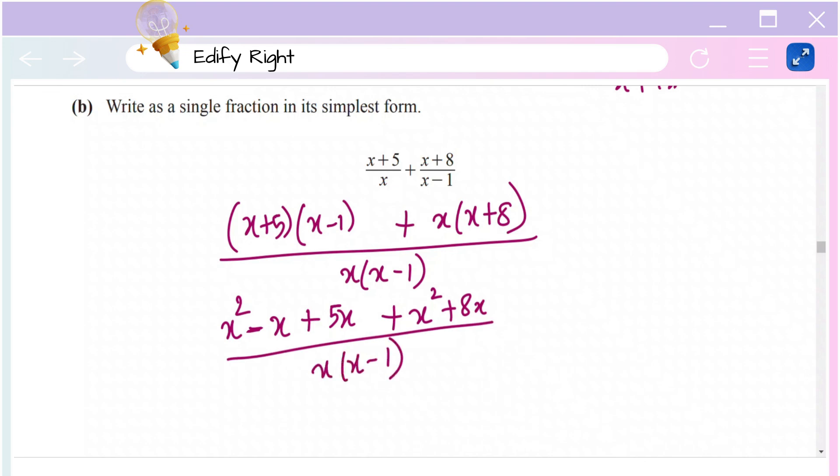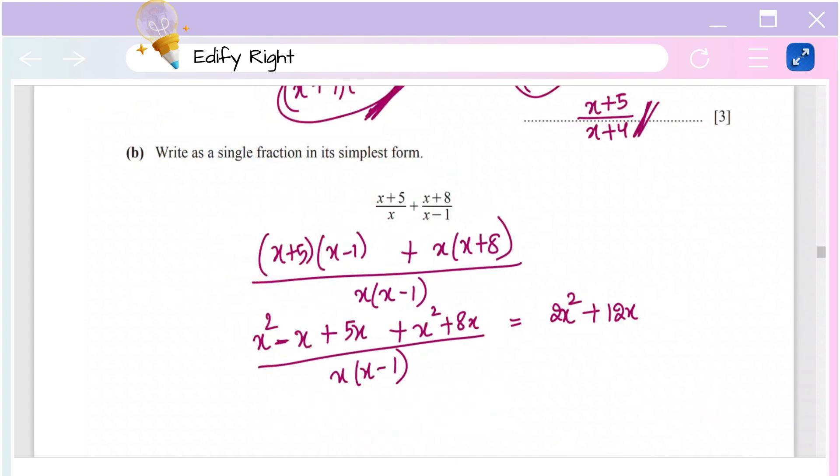Now simplify. Take the common terms together and simplify them further. You get 2x² + 12x - 5 over x(x - 1). That's the final answer.